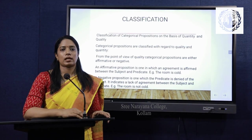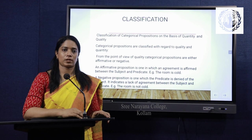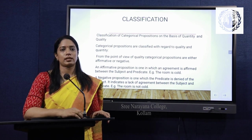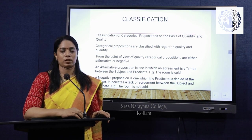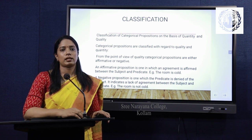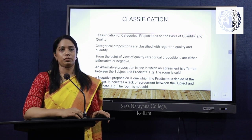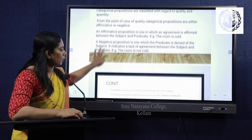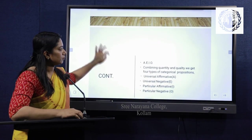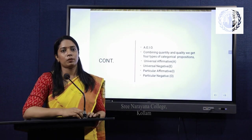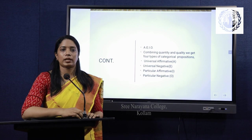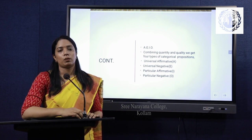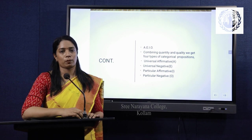Now we are moving to the classification of categorical propositions. Based on quantity, categorical propositions can be divided into two: universal proposition and particular proposition. And based on quality, the categorical proposition is divided into two: affirmative proposition and negative proposition. Combining both quantity and quality, we have four kinds of categorical propositions: universal affirmative or A propositions, universal negative or E propositions, particular affirmative or I propositions, and particular negative or O propositions.